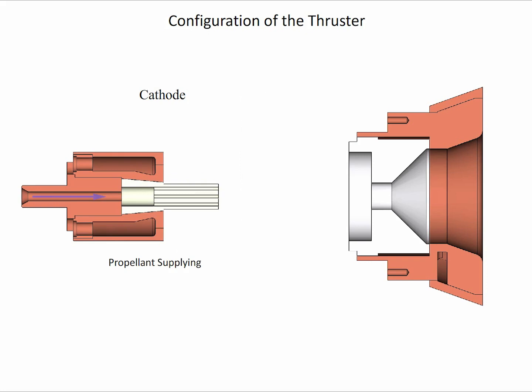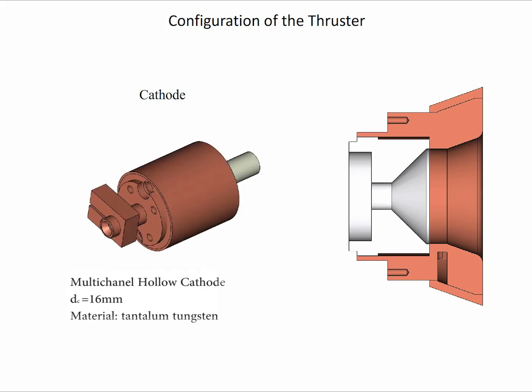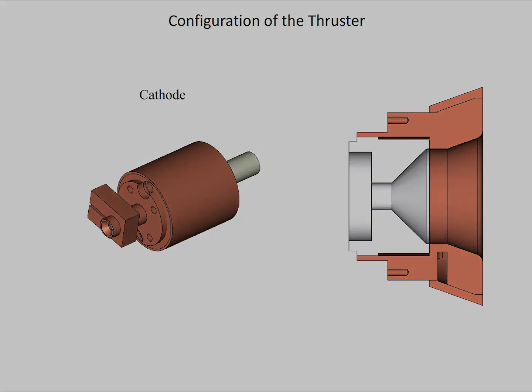There is a hollow cathode connector on the left side. The propellant flows through the center of the connector and reaches the hollow cathode. There is a large cavity inside the cathode base connecting with nine cylindrical channels. The cavity acts as a buffer to increase the uniformity of the propellant distribution in nine channels. The cathode is connected to the electric cable with an annular copper block which is installed around the cathode connector.